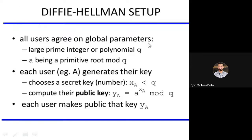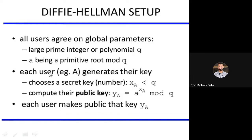There is a setup for Diffie-Hellman. All users agree on global parameters because everything is made public — it should be global, not local. First, a large prime number or polynomial Q should be assumed, and A being a primitive root mod Q. Each user generates their key by choosing a secret key XA, where XA should be less than Q.